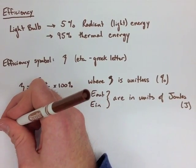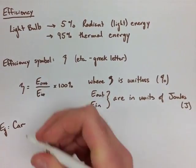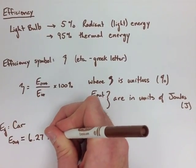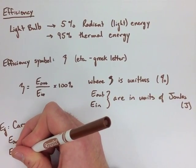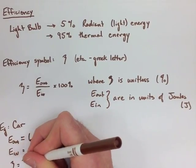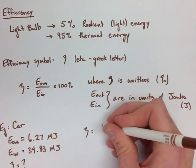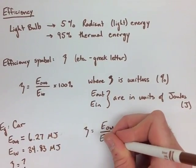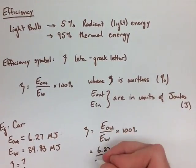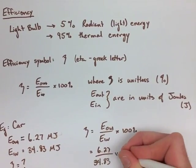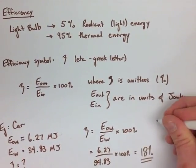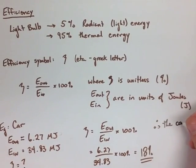Looking at the first example where we're checking the efficiency of a car, our energy out is 6.27 megajoules, our energy in is 34.83 megajoules, and we want to find the efficiency. Our efficiency equals energy out divided by energy in times 100%, and we plug in our numbers and find that the car is actually only 18% efficient from what energy it's getting from the gasoline.